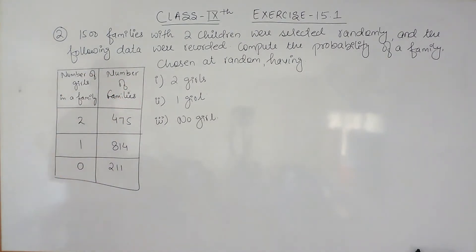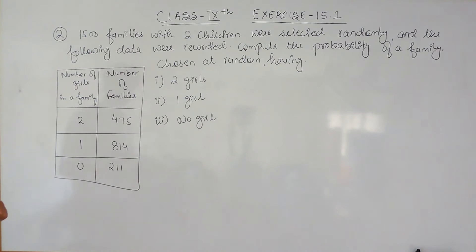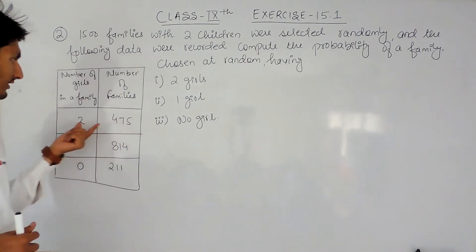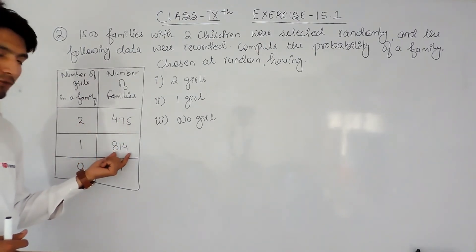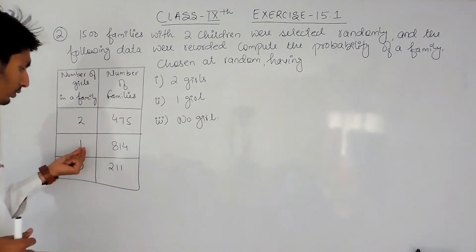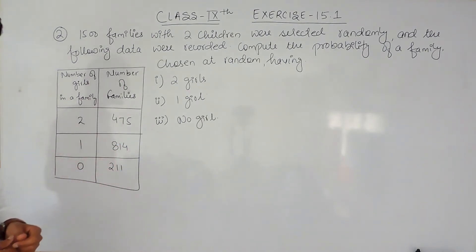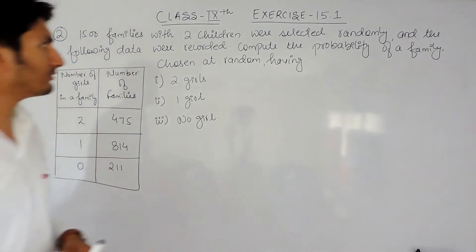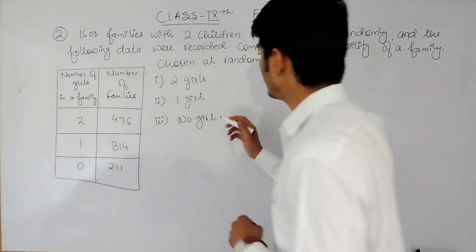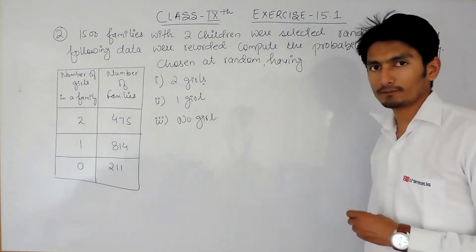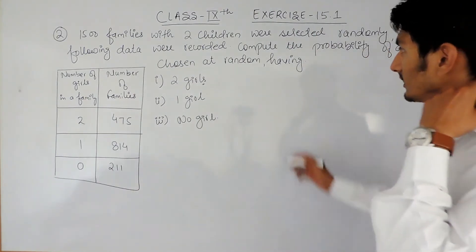This is the data: out of 1500 families, 475 are the number of families having two girls, 814 is the number of families having only one girl, and 211 families are without a girl.